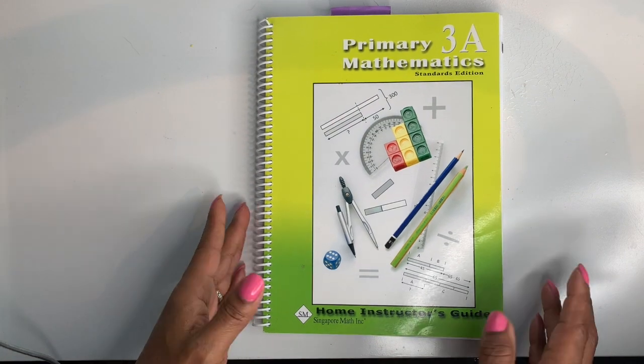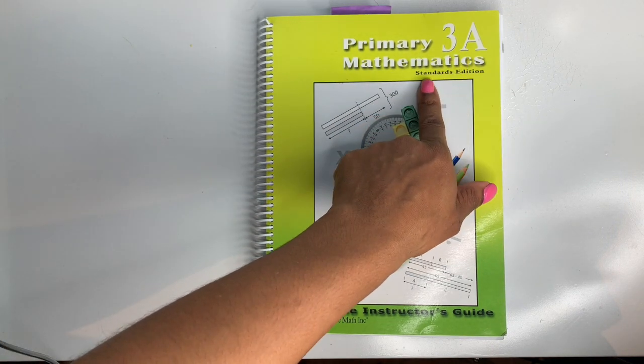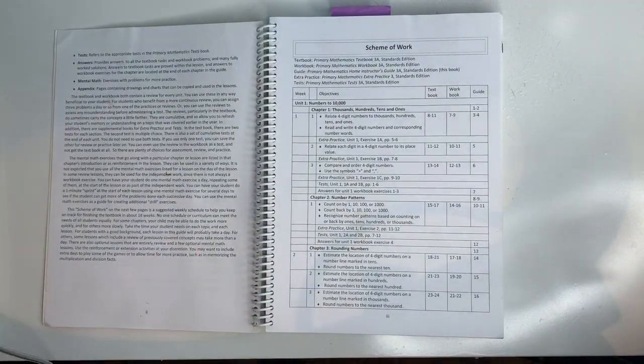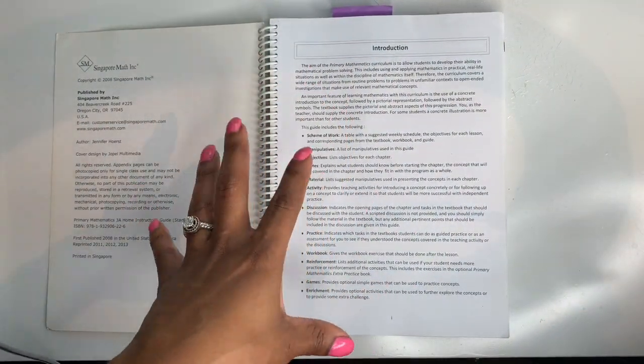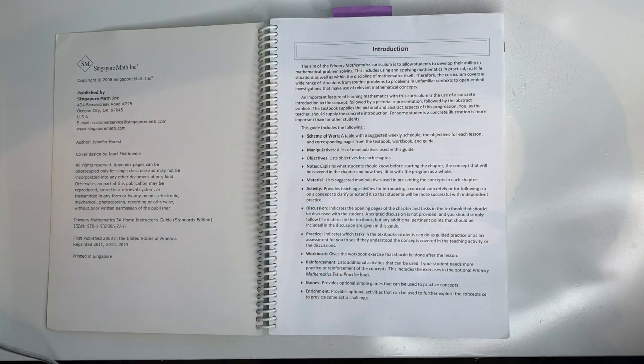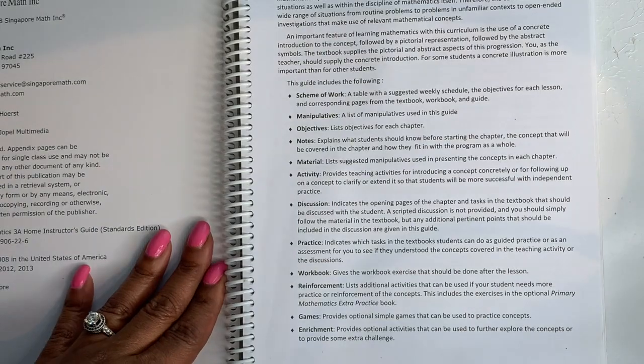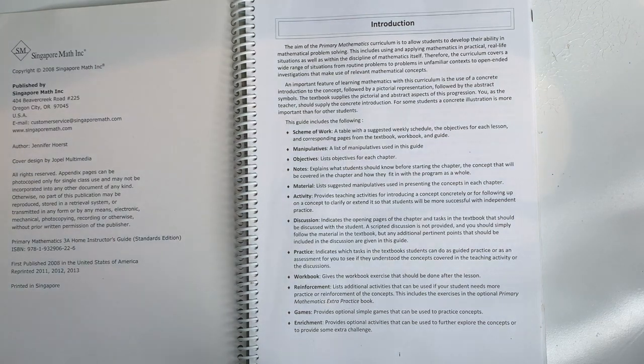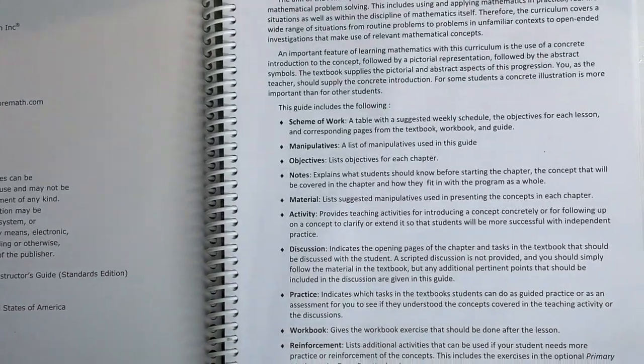So let's get right into it. Okay guys, so I have here the Home Instructor's Guide for Primary Mathematics 3A Standards Edition. This walkthrough, flip-through is the standards edition. I will be doing a Common Core and a U.S. edition eventually. So I'm starting with the Home Instructor's Guide because it's very important. You do need this guys. It's going to make your life a lot easier. So let me zoom in. This is the introduction.